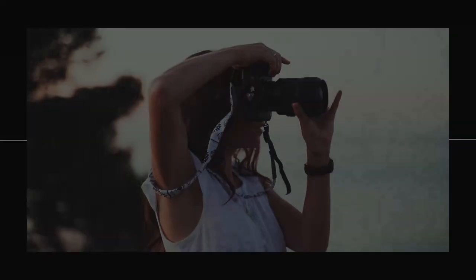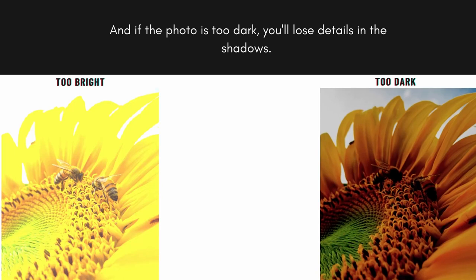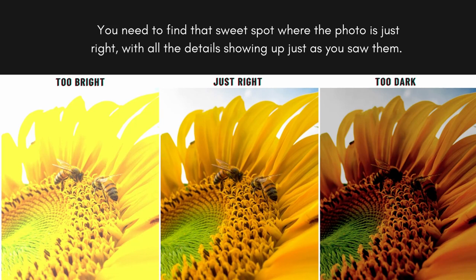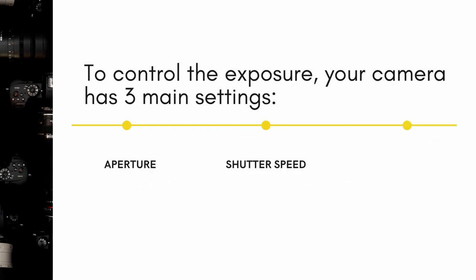If you take a photo and the highlights are too bright, you'll lose details in those areas, and if the photo is too dark, you'll lose details in the shadows. So you want to find that sweet spot where the photo is just right, with all the details showing up just as you saw them. To control the exposure, your camera has three main settings: aperture, shutter speed, and ISO. Each of these settings affects how much light reaches the sensor, and by adjusting them you can control the exposure and get that perfect photo.